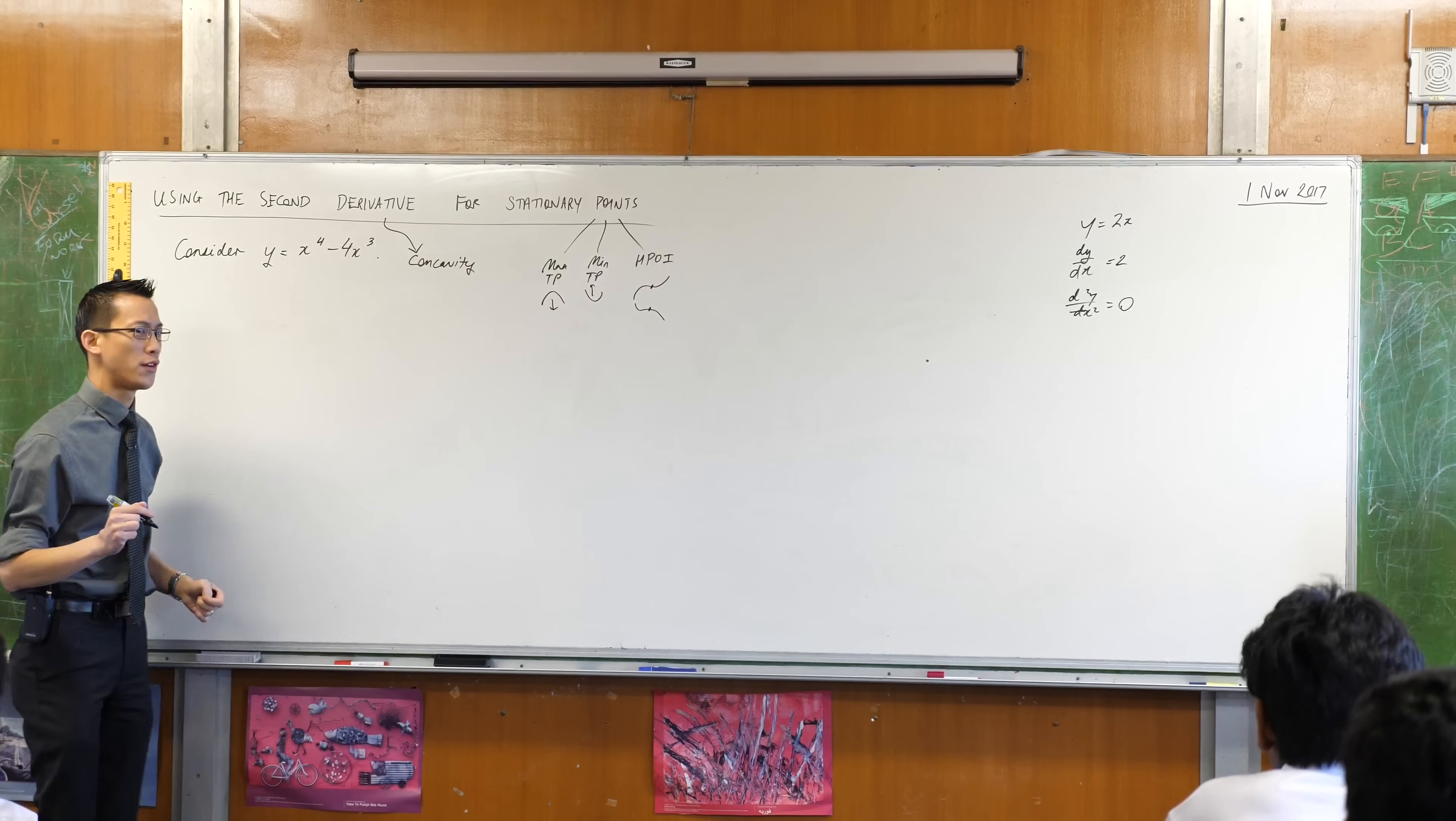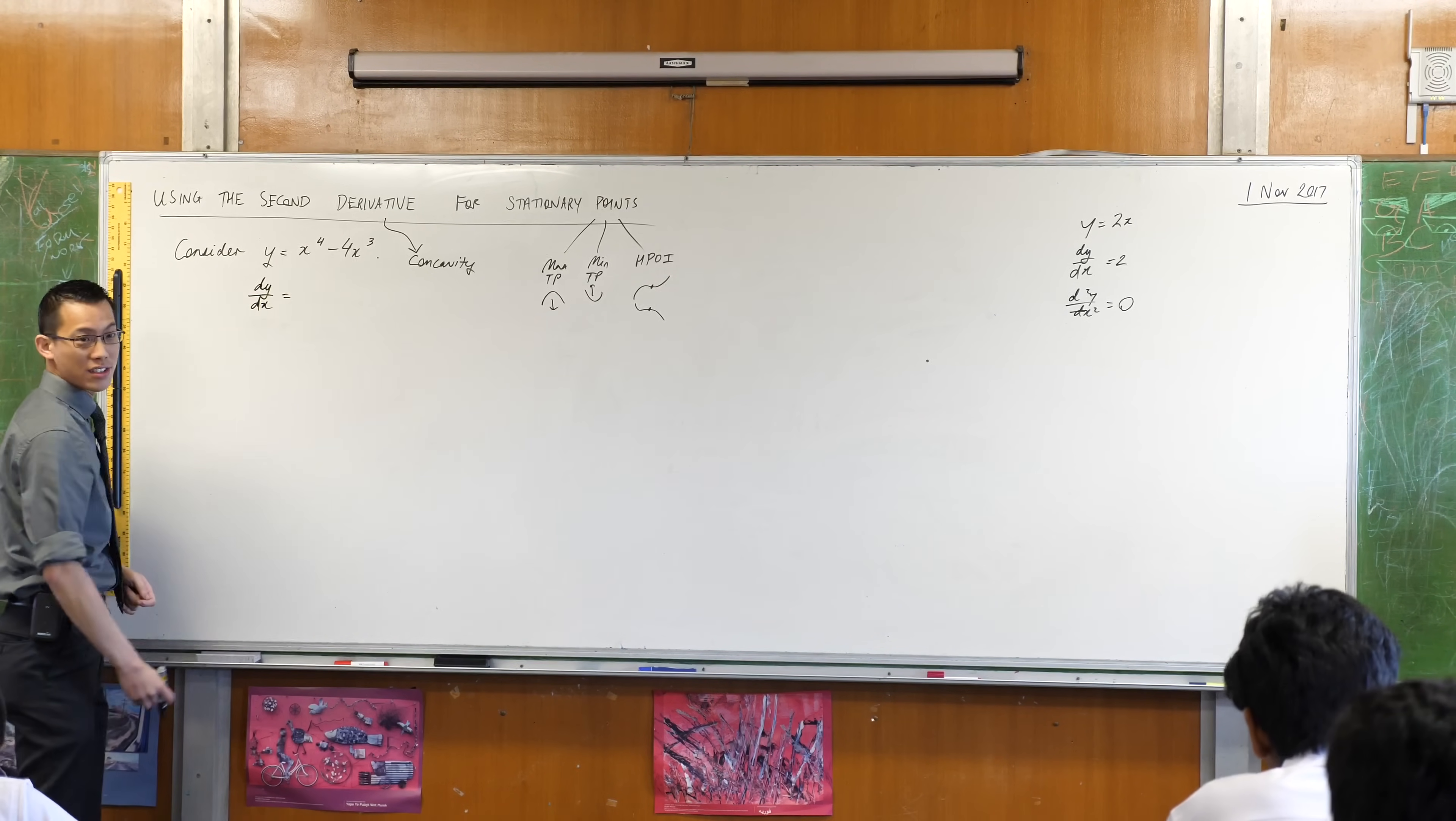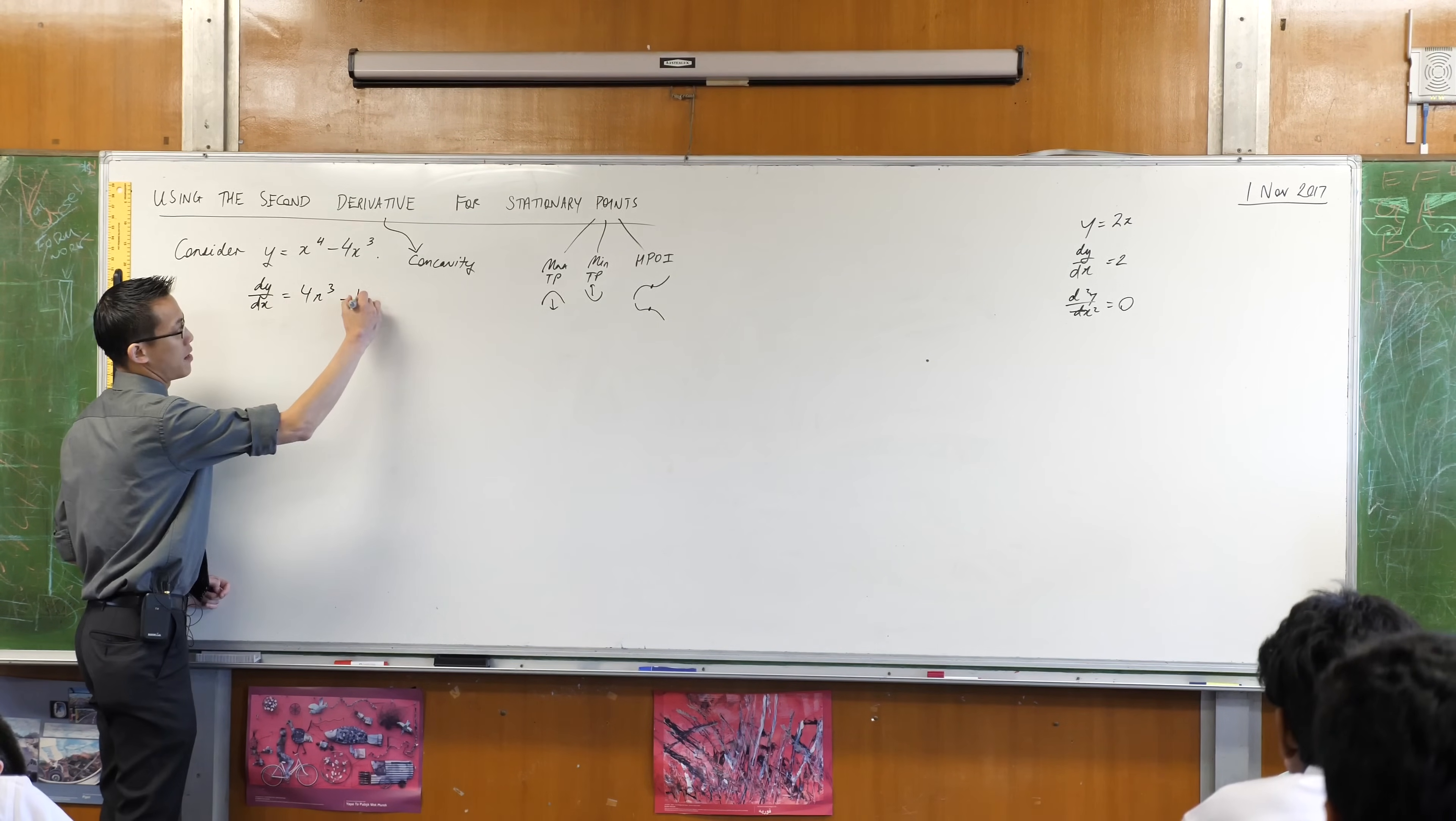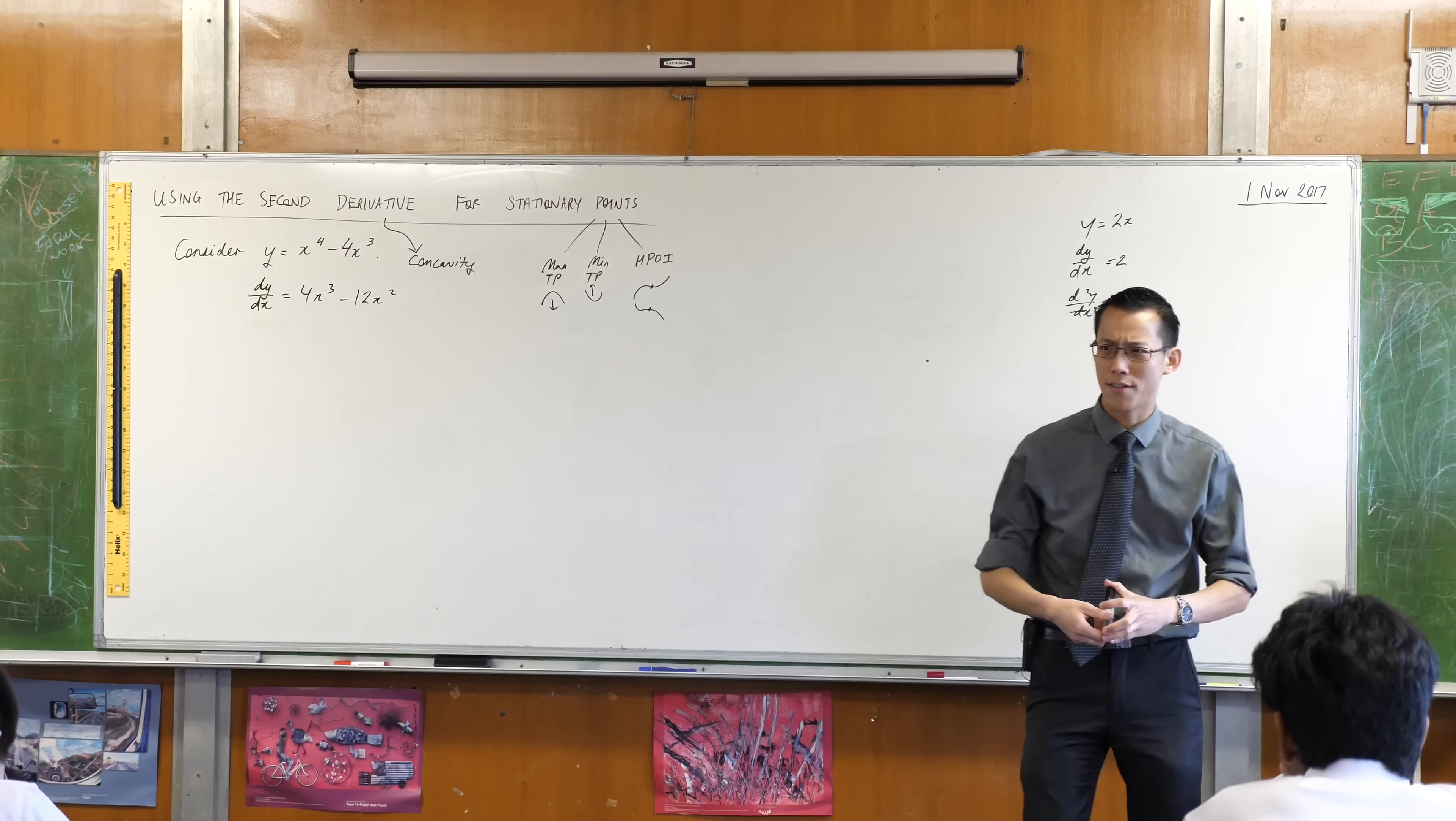If we start with this guy, we're going to do our stock standard thing, find the stationary points, determine their nature. So if I want to find them, what's my first step? Let's differentiate. So this is an easy enough function, you guys can do the legwork for me, no chain rule, no product rule required. What's the derivative? 4x cubed minus 12x squared. Cool.